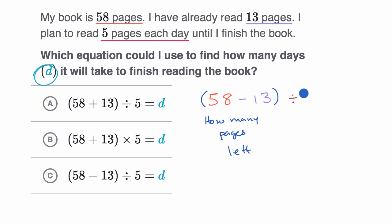So if we divide this by five, then this whole expression, let me do it in this color, this whole expression is going to tell us how many days left, how many days left. And so this is going to be equal to D because D is the number of days left to finish reading the book.